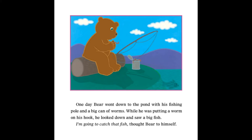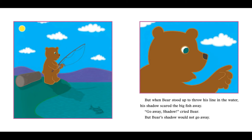One day, Bear went down to the pond with his fishing pole and a big can of worms. While he was putting a worm on his hook, he looked down and saw a big fish. I'm going to catch that fish, thought Bear to himself. But when Bear stood up to throw his line in the water, his shadow scared the big fish away.